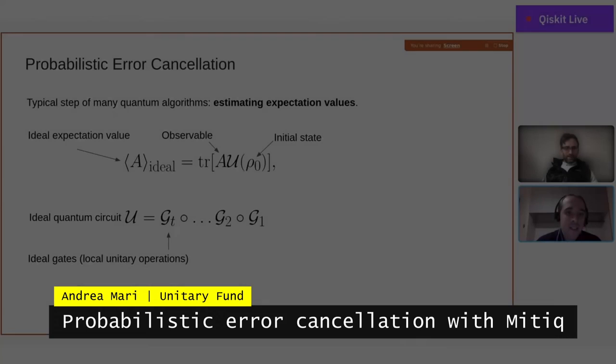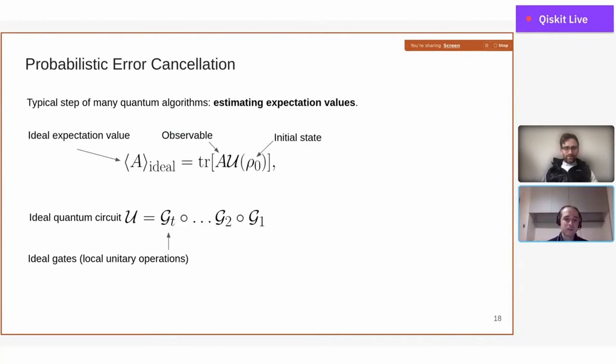So let me go to probabilistic error cancellation. This is apparently a completely different technique, but as we are going to show, it can be applied in a very similar way as zero noise extrapolation. Probabilistic error cancellation is a technique to estimate ideal expectation values. I assume that we want to measure the expectation value of the observable A after an ideal circuit U applied to an initial state ρ0, and the circuit is composed of T local gates G1, G2, GT.